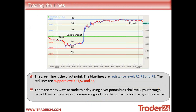This is basically a screenshot of that with our pivot levels superimposed onto the chart. The green line is the pivot point, the blue lines are our three resistance levels, and the red lines are our three support levels. There are many ways to trade this day using pivot points but I'm going to walk you through a couple of them and discuss why some are good in certain situations and why some are not, since it doesn't always work out 100%.